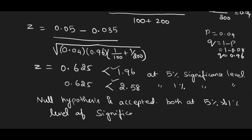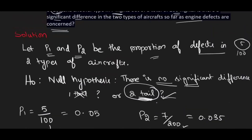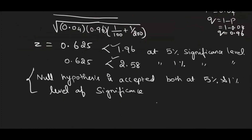The null hypothesis is accepted at both the 5% and 1% level of significance. We conclude that there is no significant difference between the two types of aircraft with respect to engine defects. This completes the first example for difference of proportions.